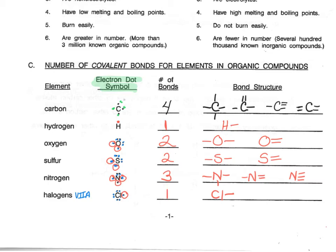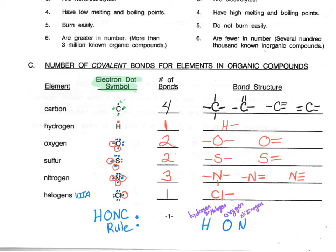Rather than using Lewis dot structures every time we draw a compound, we found that there's a simple mnemonic to help us remember how many bonds should be present. This mnemonic is called the HONC Rule. The HONC Rule has H for hydrogen and the halogens, O for oxygen, N for nitrogen, and C for carbon. It says that H has one bond, O has two bonds, N has three bonds, and carbon normally has four bonds.